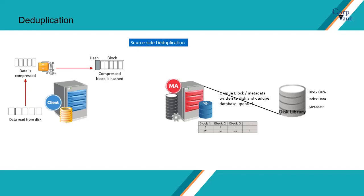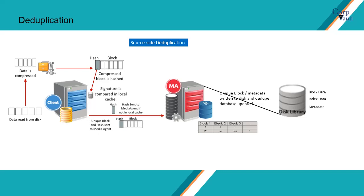Let's discuss how source-side deduplication works. On the client computer, data is read from disk. If compression is enabled, data is compressed. The compressed block is then hashed and the signature is updated in the local deduplication cache. If the hash is present in the local cache, then only a pointer along with index data and metadata are stored on the backend storage. If the hash is not present in the local cache, then it is sent to the media agent for verification in the deduplication database. If the deduplication database does not have an entry for the hash or signature, then it is a unique block. The hash and the data block will be sent to the media agent. On the media agent, the signature is compared and updated in the deduplication database. If it is a unique block, then it will be sent to backend storage.